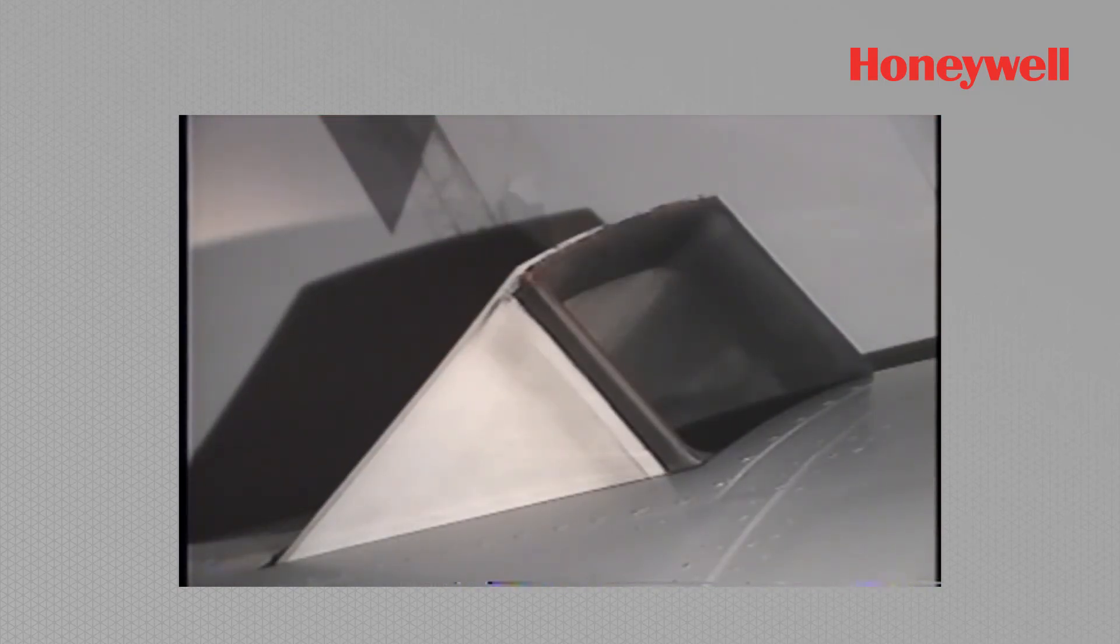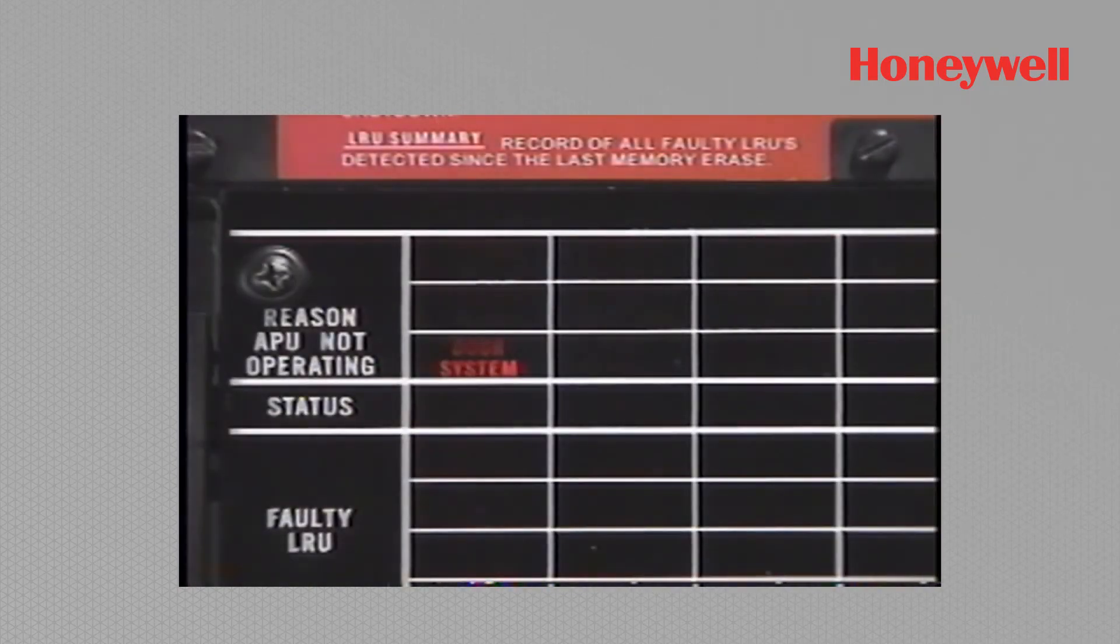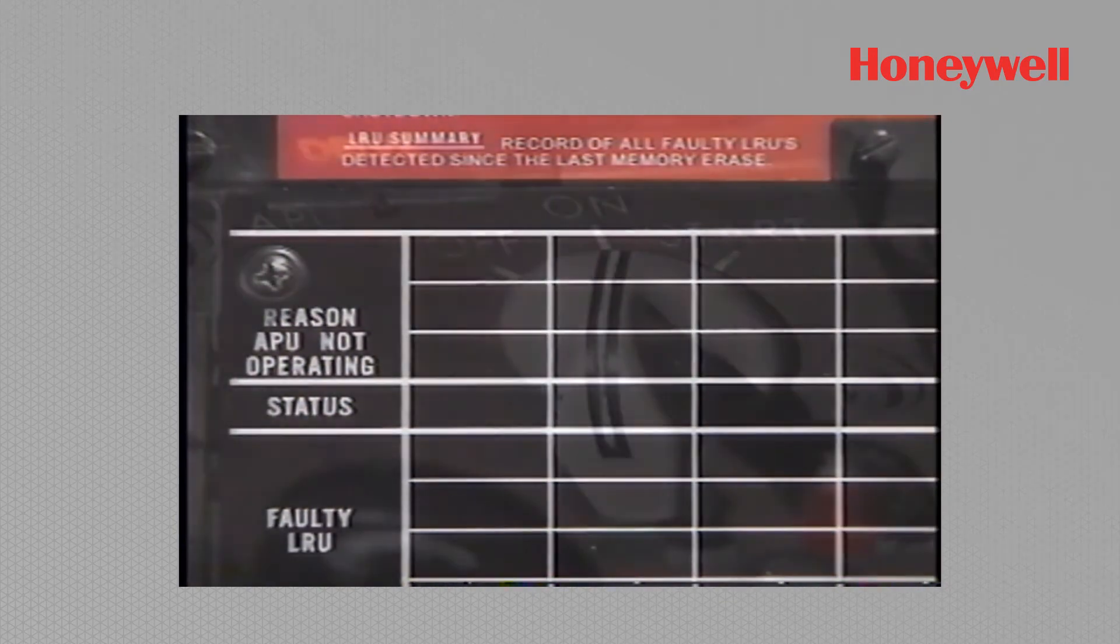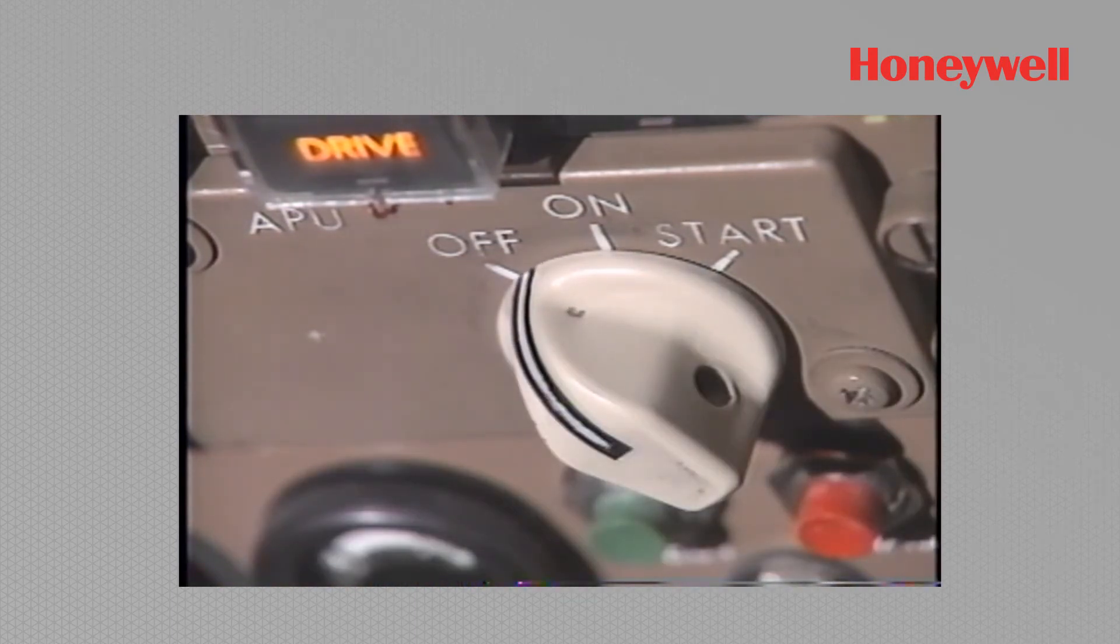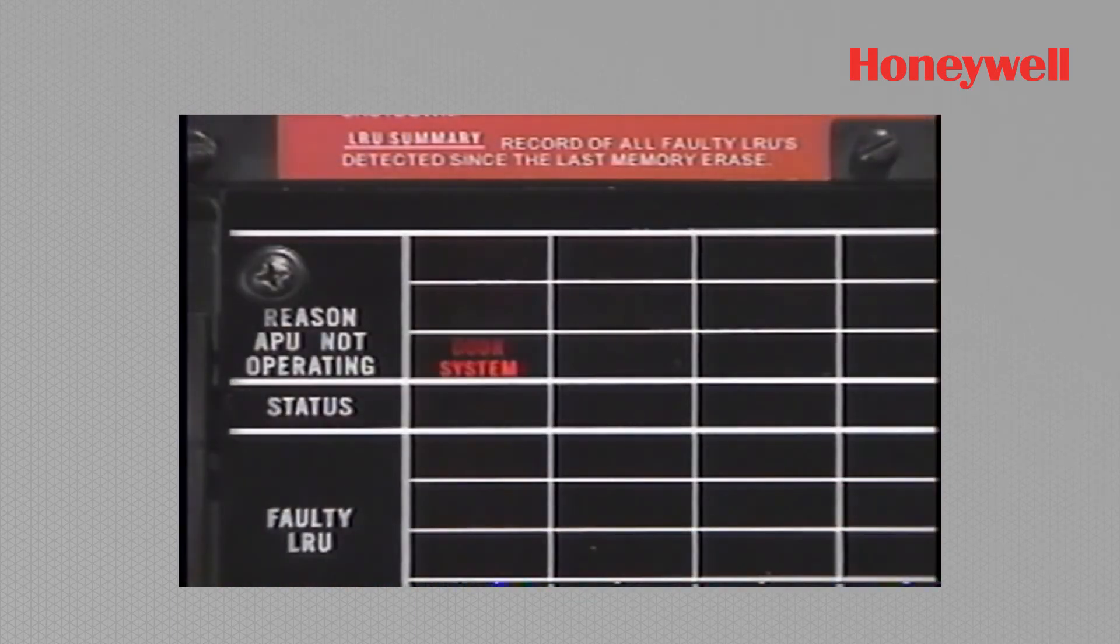If a door open signal is eventually received, the door system lamp goes off and the start cycle continues. If a stop command is received while the door system lamp is on, shutdown occurs and door system is stored as the reason APU not operating.